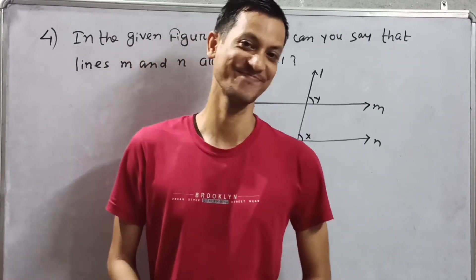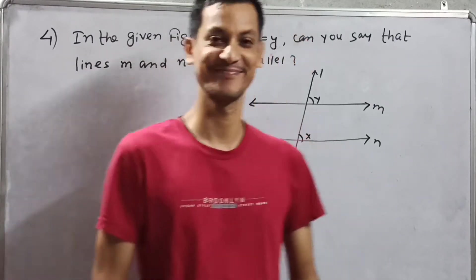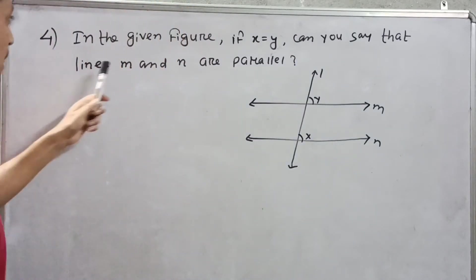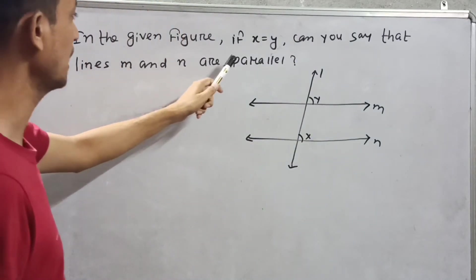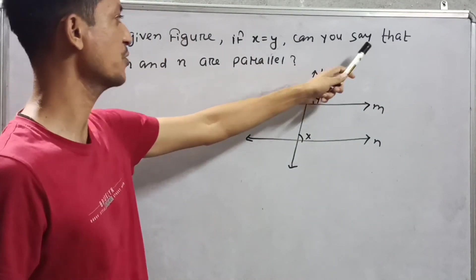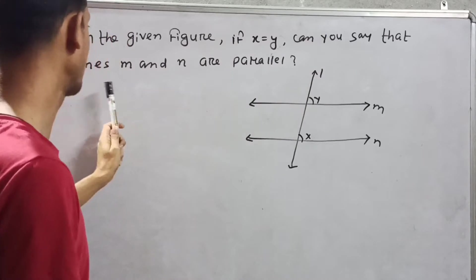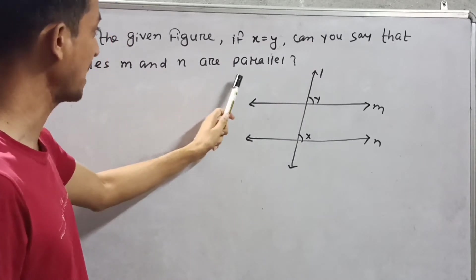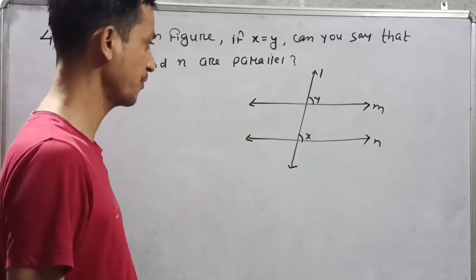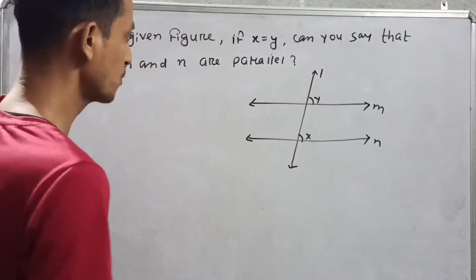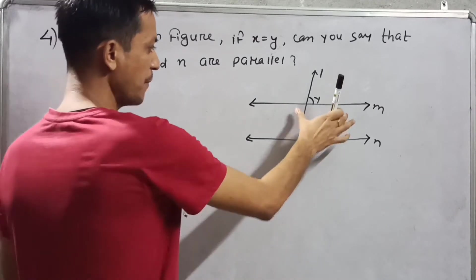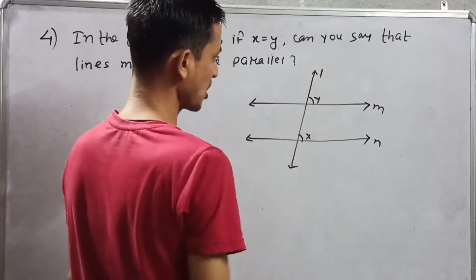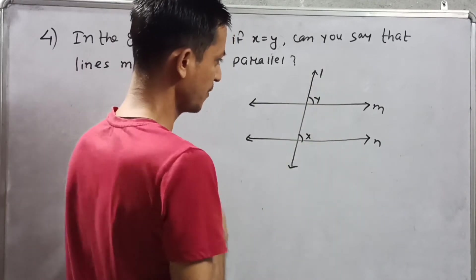Welcome back to my channel. In the given figure, if X is equal to Y, can you see that lines M and N are parallel? You can see the figure. M and N are two lines and L is a transversal towards them.